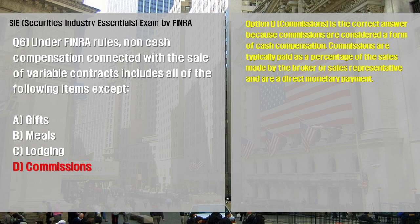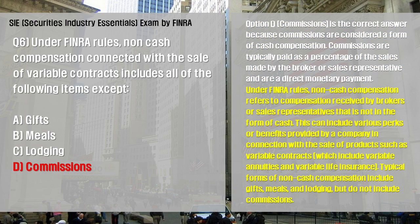Option D, Commissions, is the correct answer because commissions are considered a form of cash compensation. Commissions are typically paid as a percentage of the sales made by the broker or sales representative and are a direct monetary payment. Under FINRA rules, non-cash compensation refers to compensation received by brokers or sales representatives that is not in the form of cash. This can include various perks or benefits provided by a company in connection with the sale of variable contracts. Typical forms of non-cash compensation include gifts, meals, and lodging, but do not include commissions.